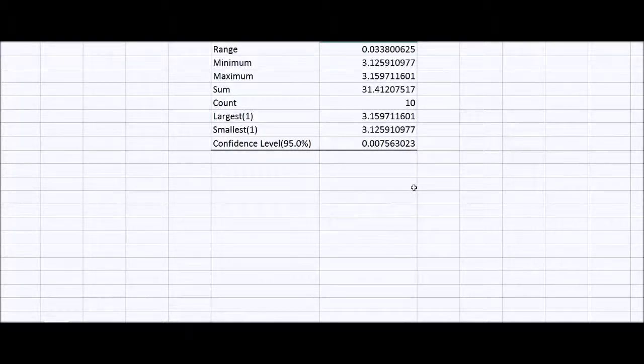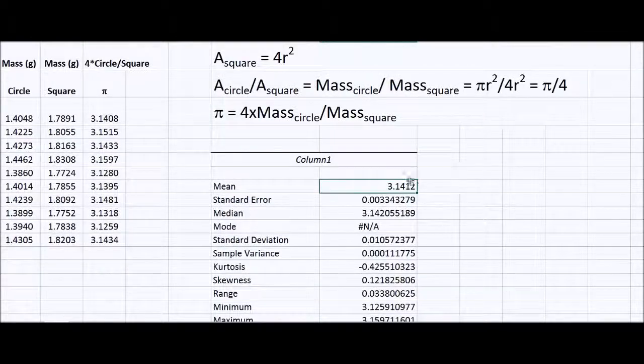The 95% confidence limit is 0.0076. What that means is, if I did this 10 times over and over again, 95% of the times I should be within plus or minus 0.0076 of the mean that I have here.